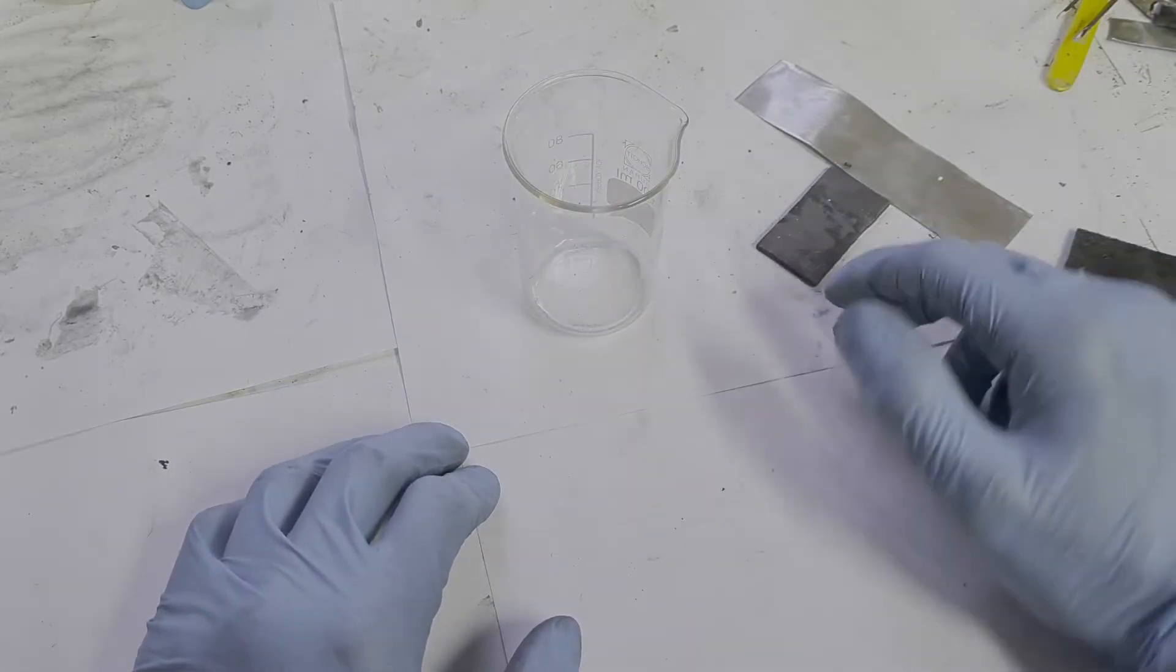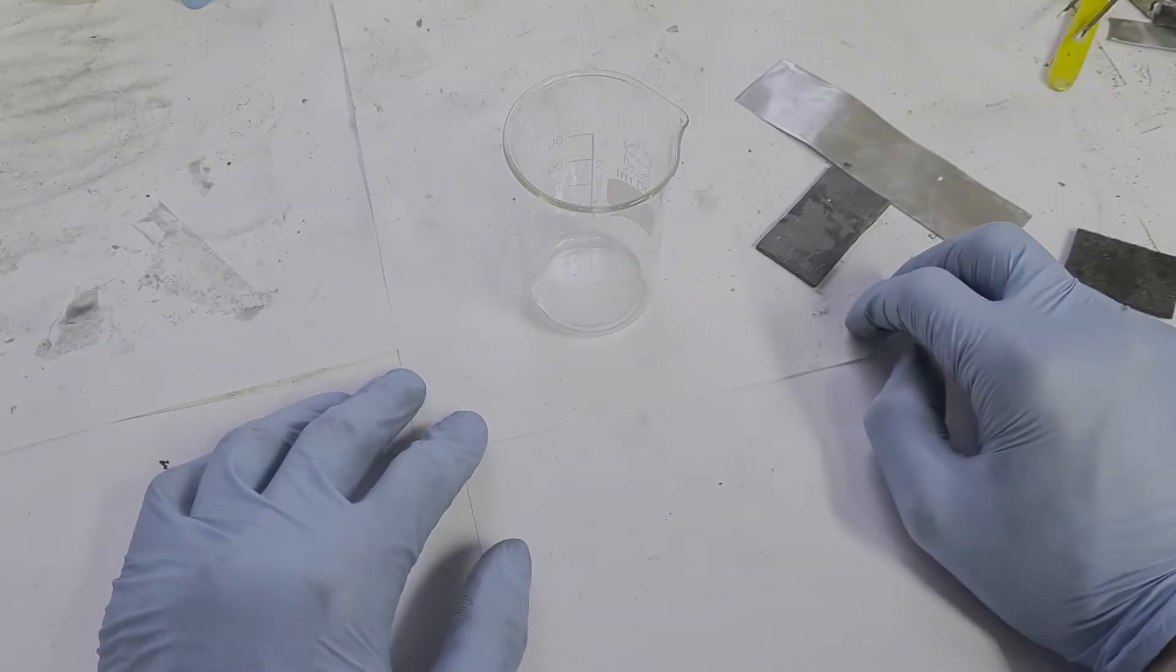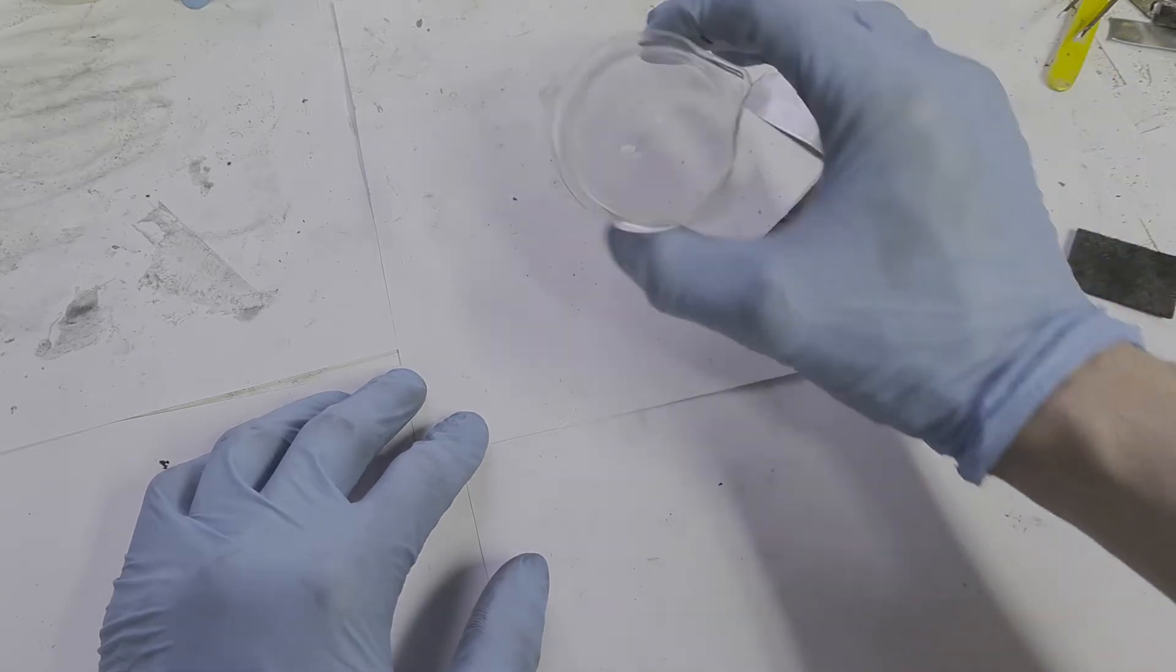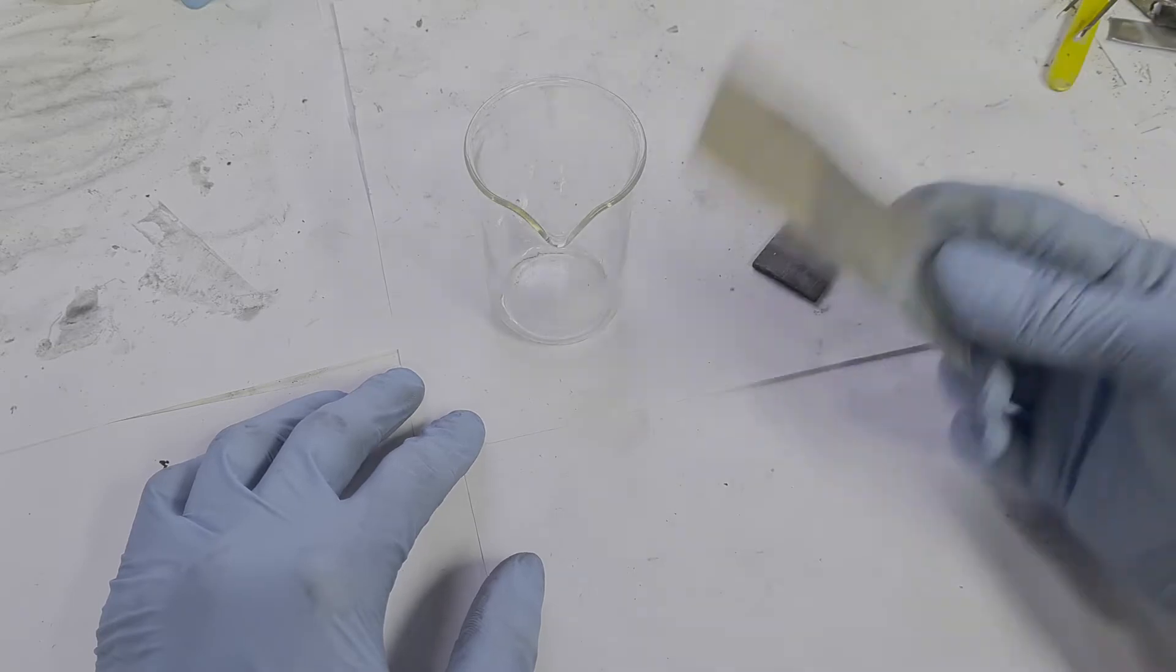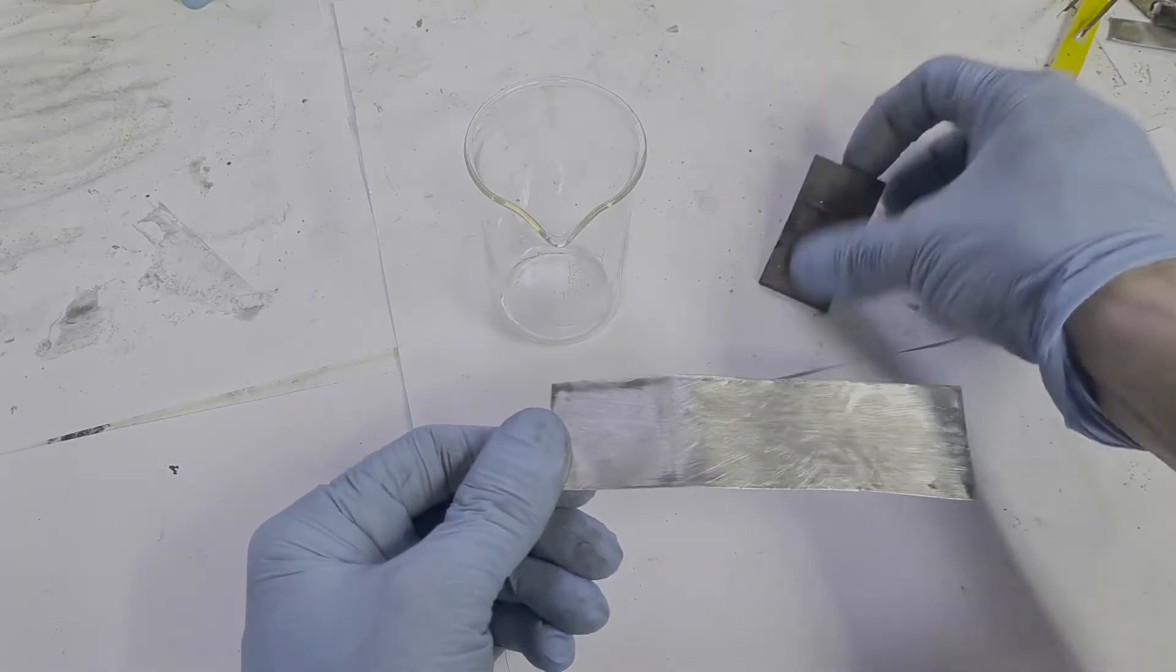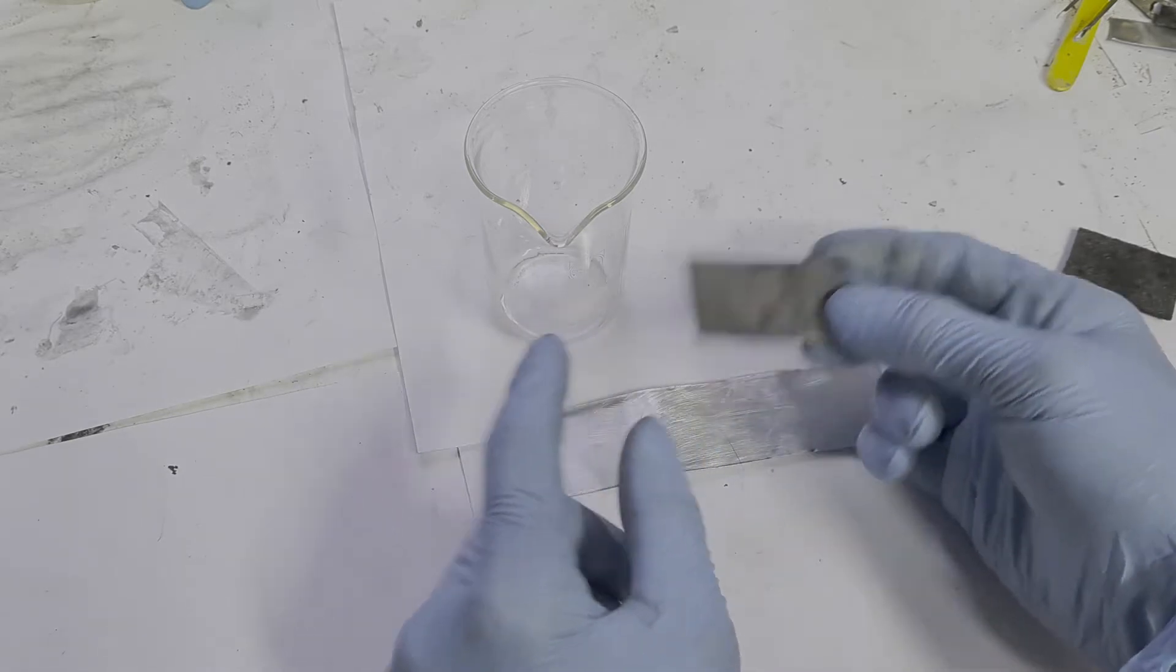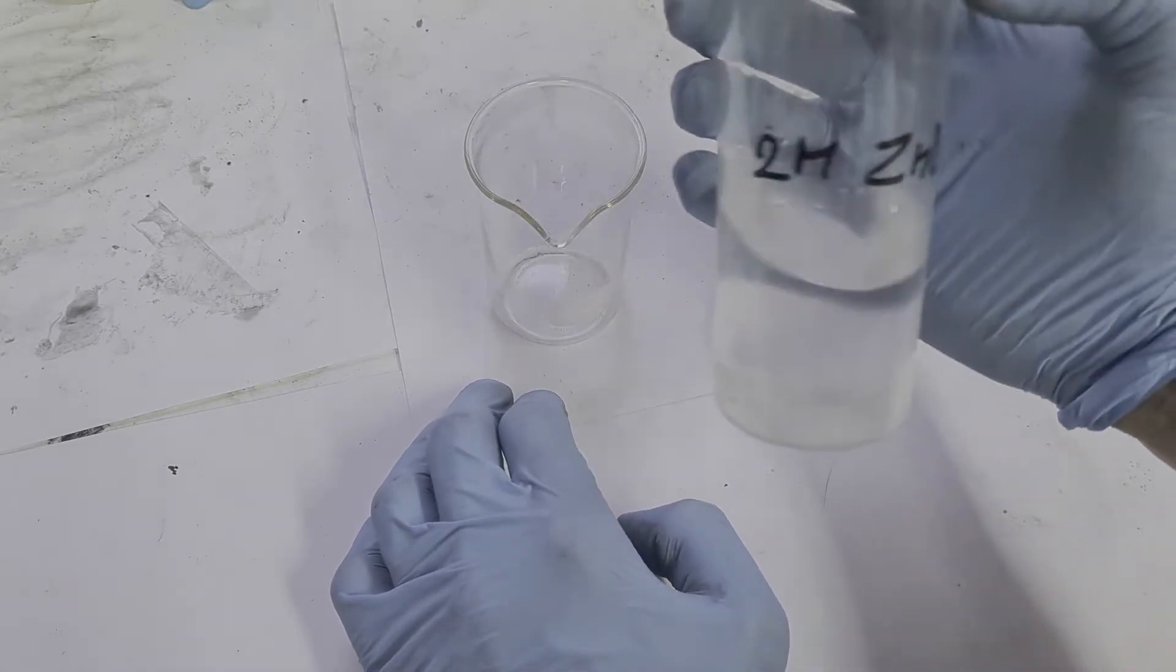But today I will change the construction of the basic zinc bromide gravity cell. For the housing I will use this cup. The negative electrode is zinc, and for the positive electrode I use a graphite plate. The electrolyte which I will use is two molar zinc bromide.